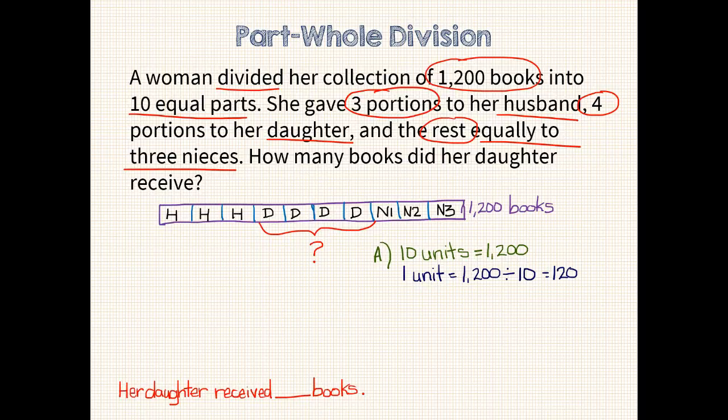The last step is to multiply the daughter's 4 parts by 120, which is 480. Her daughter received 480 books. Wow, that's a lot of books.